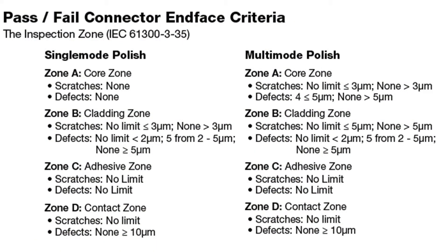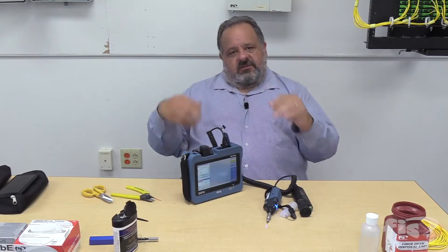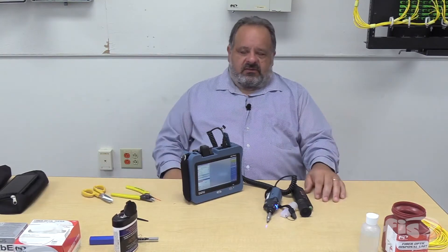Each zone has a different pass/fail threshold. There are really two criteria: contamination and scratches/pits. There is a multi-mode and a single-mode standard — multi-mode is a little less stringent than single-mode. The core area, zone A, is really the most important since that's our light-gathering area. For both multi- and single-mode, I believe scratches and defects in zone A must be zero. As we move out into the cladding and ferrule, we get a little more leeway.